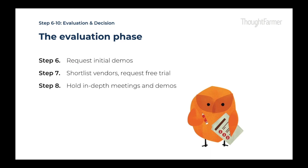For the free trial, consider big business priorities first, test your requirements, and invite others and give them tasks to do on the intranet. We've seen some really in-depth pilots done during the trial: give staff a list of use cases — find the HR policy, post a comment on a news article, post a news article — and see how they're feeling about that flow. Get their feedback that way as well.